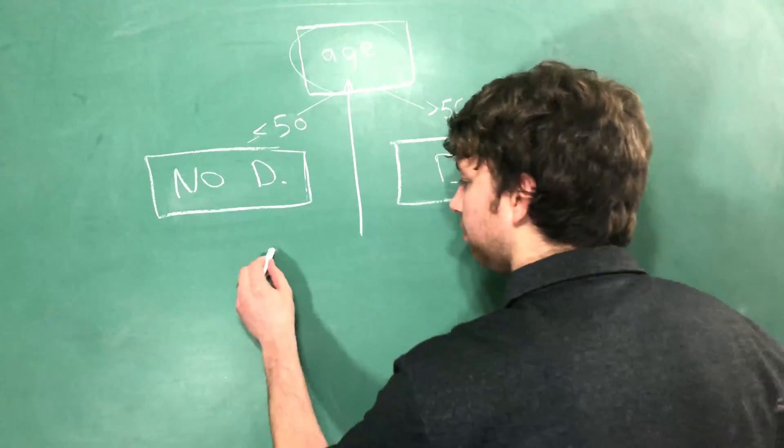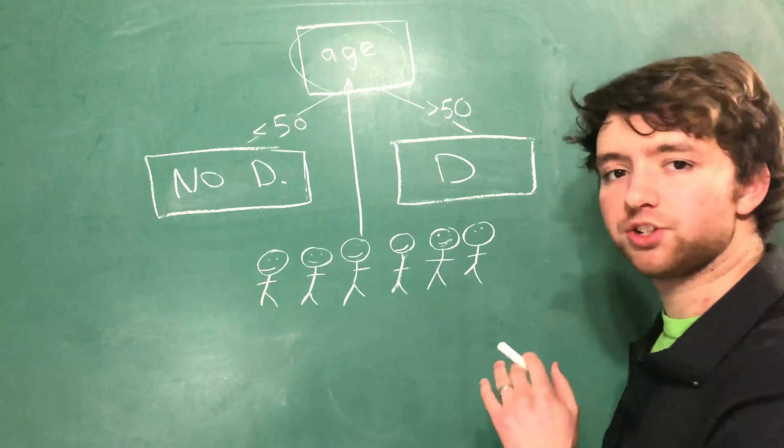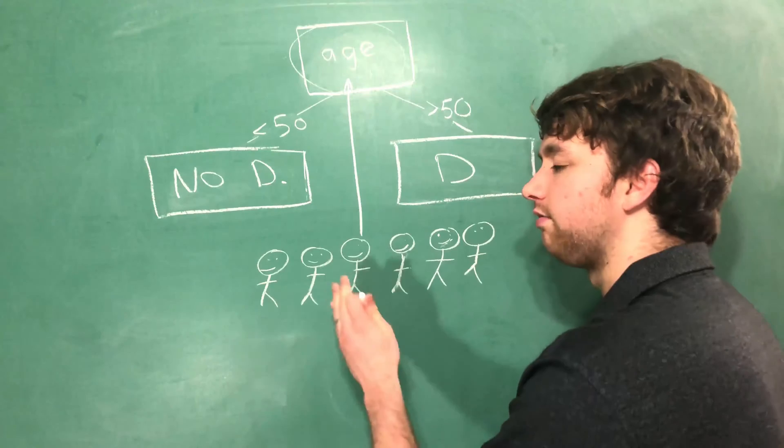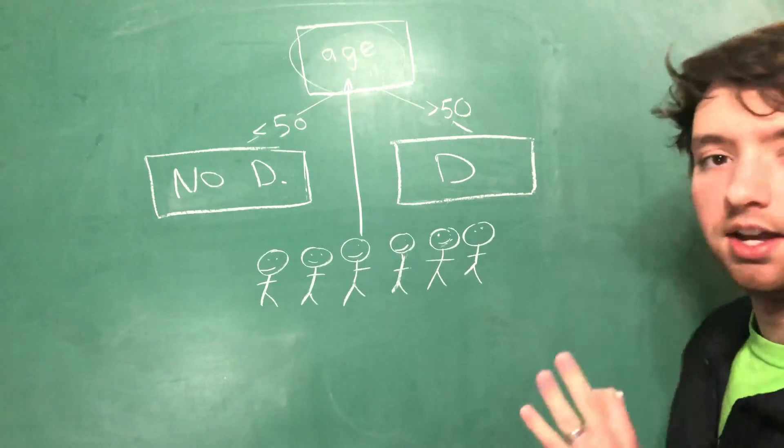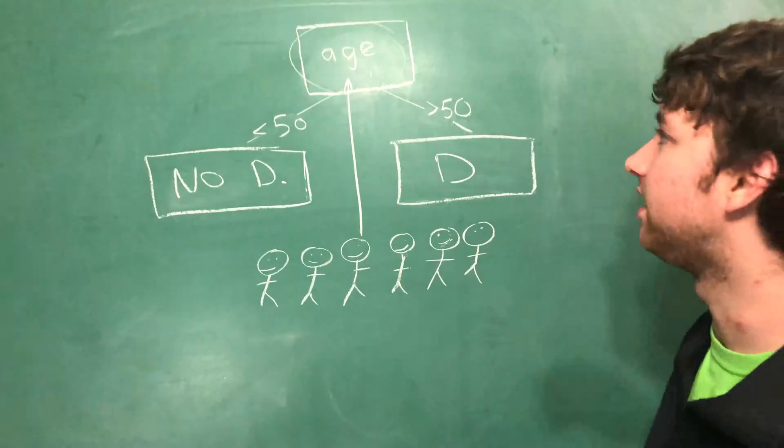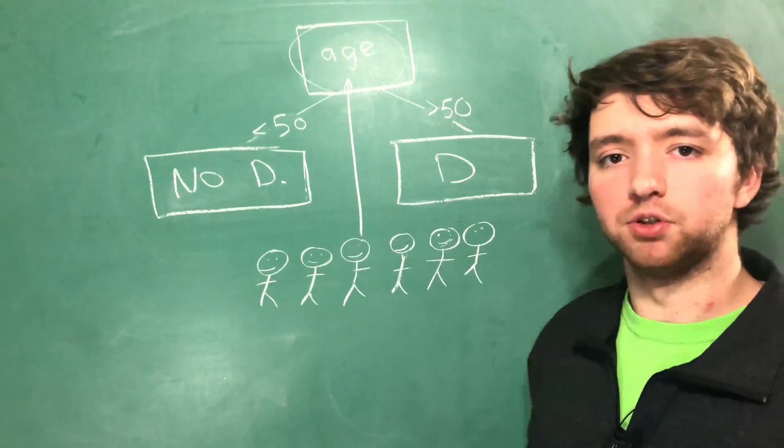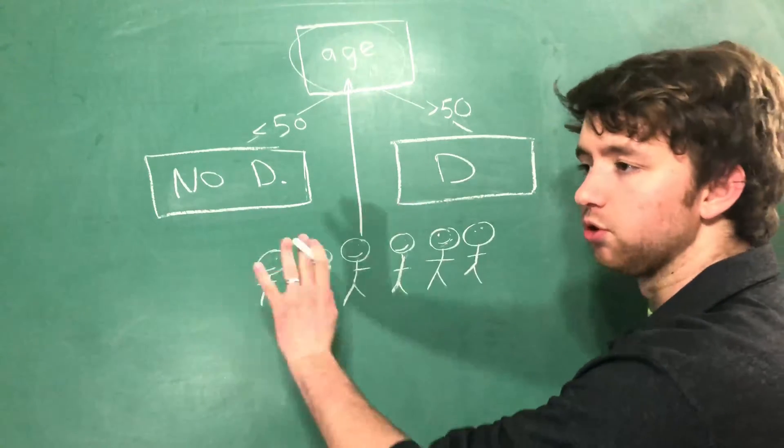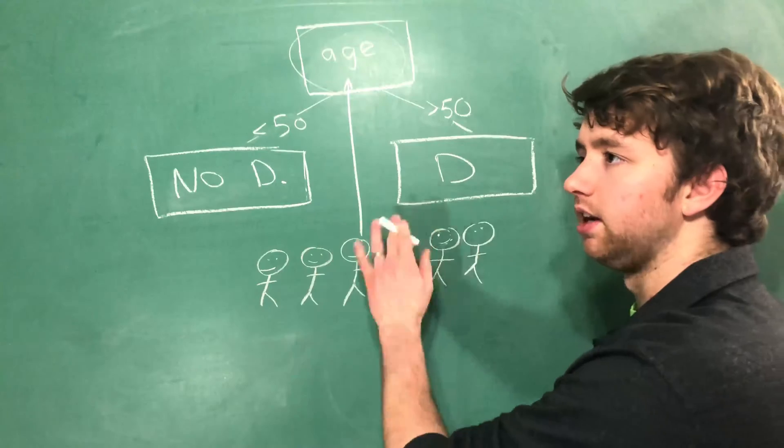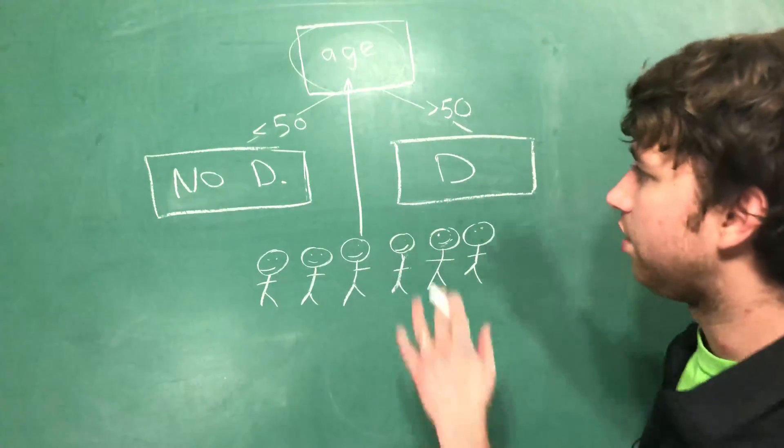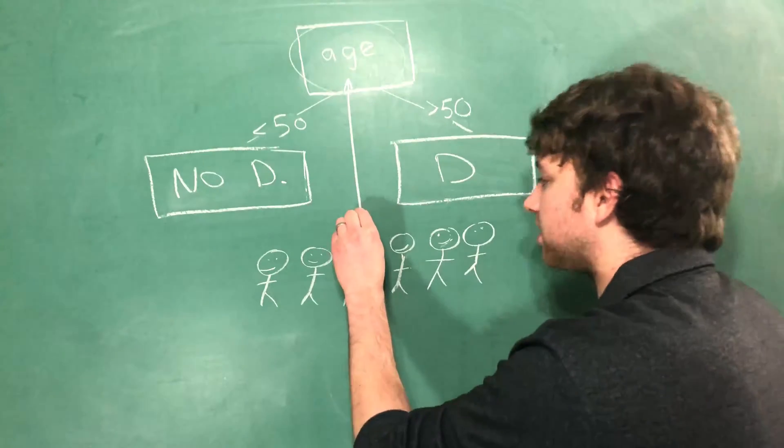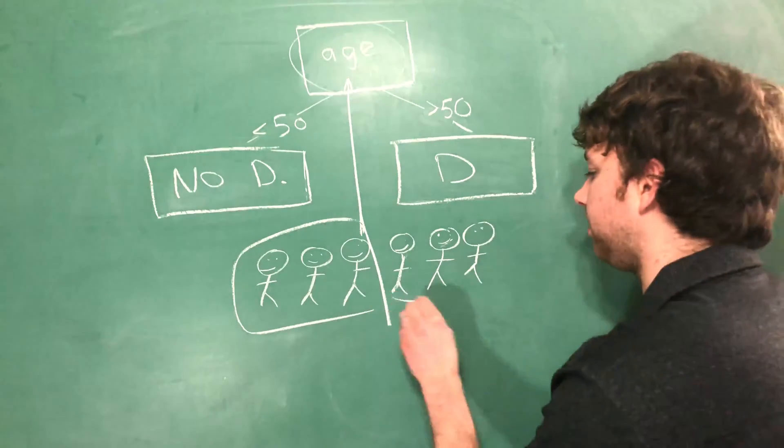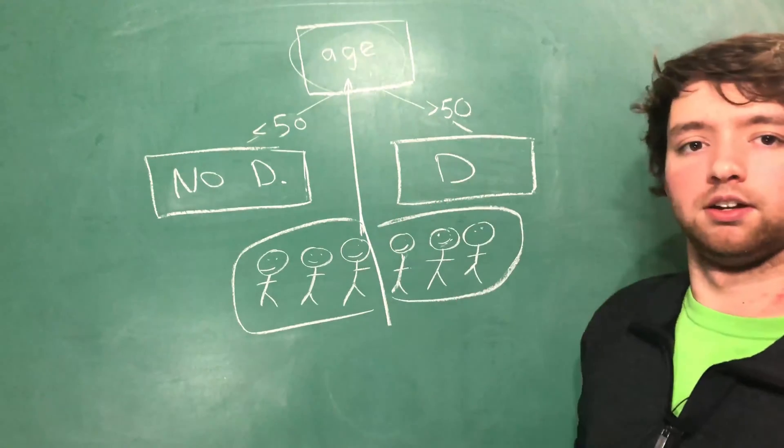So for example if we have some people, we want to ask a question that is best going to separate the people with diabetes from the people who do not have diabetes. That's why it's called discriminatory power. A descriptive feature has a level of discriminatory power that can split the data to get one group who has diabetes and another group who does not have diabetes. We split this group and these people do not have diabetes, and these people do have diabetes. It's perfect.